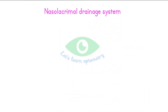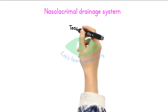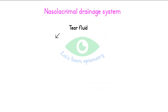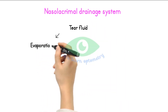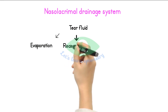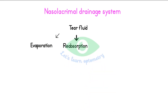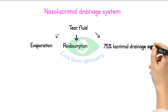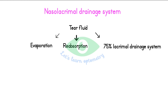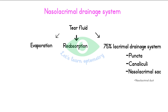The nasolacrimal drainage system: some tear fluid is lost by evaporation and some by reabsorption through the conjunctival tissue, but approximately 75% passes through the nasolacrimal drainage system. This system consists of the puncta, the canaliculi, the lacrimal sac, and the nasolacrimal duct, which empties into the nasal cavity.